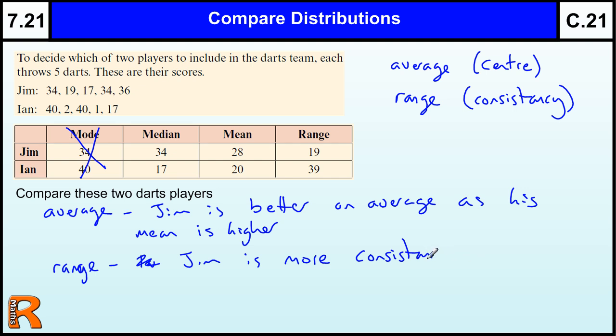And in general, consistency or consistent things are more useful than people or things that vary wildly. It's very rare that you want things to be spread out across lots of values. So Jim is more consistent because he has a lower range.